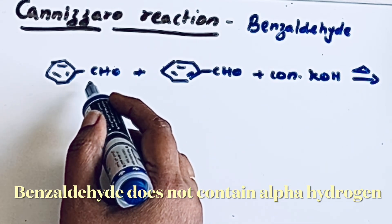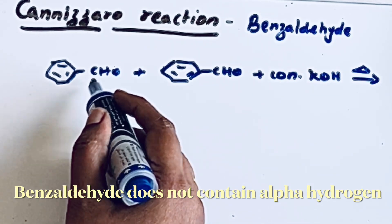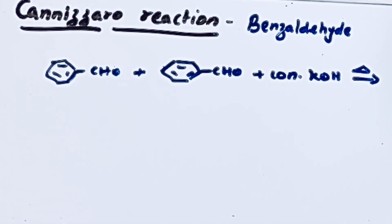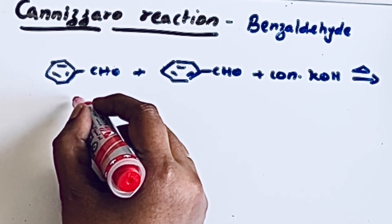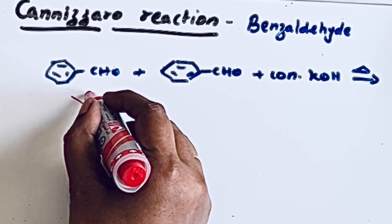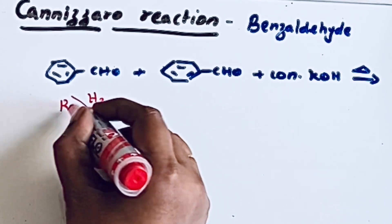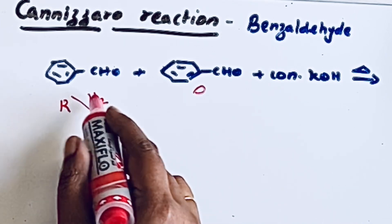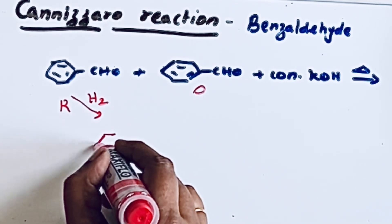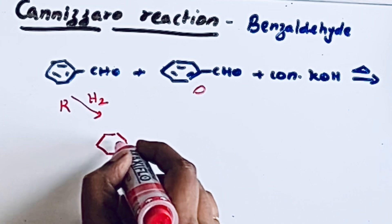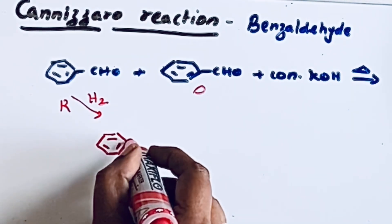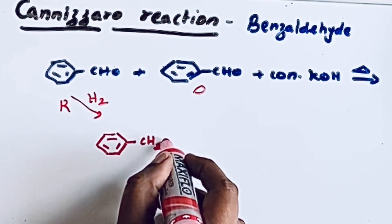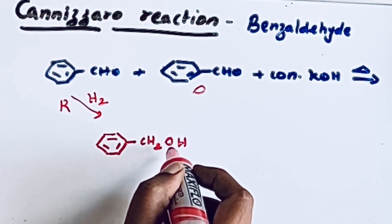One molecule undergoes oxidation and another molecule undergoes reduction. Reduction means addition of hydrogen, so this molecule undergoes reduction. Because of that, the aldehyde group is converted into CH2OH — that is, benzyl alcohol.